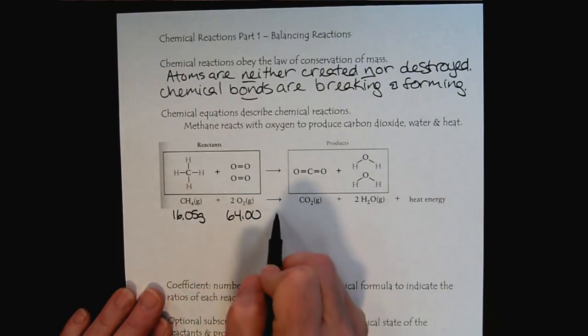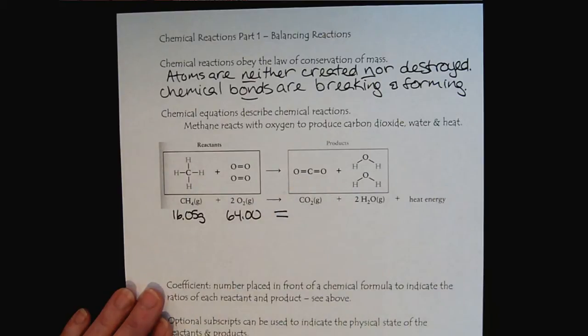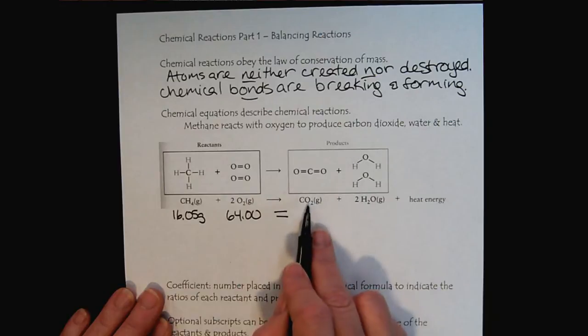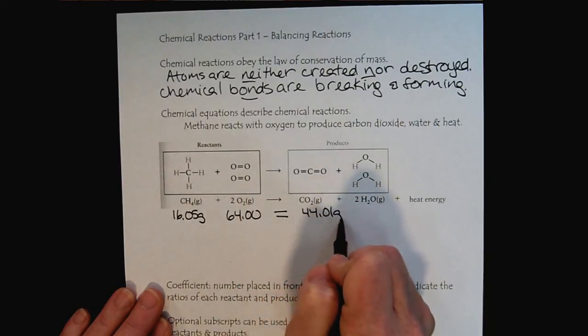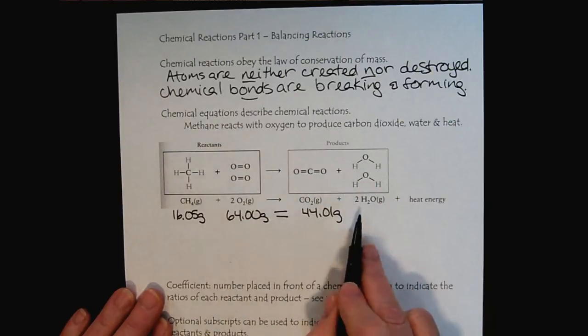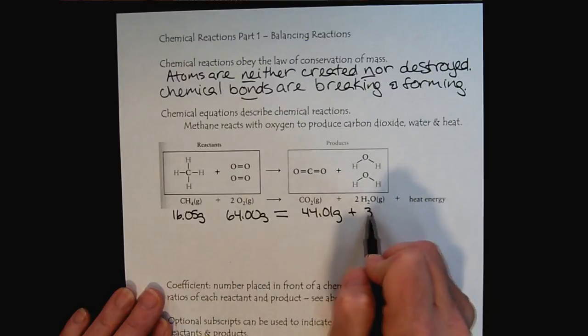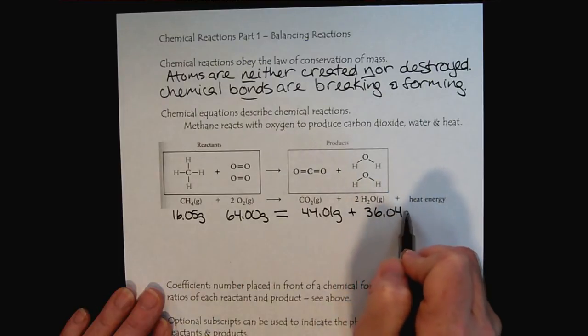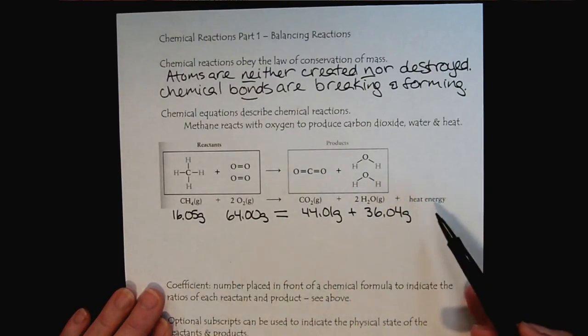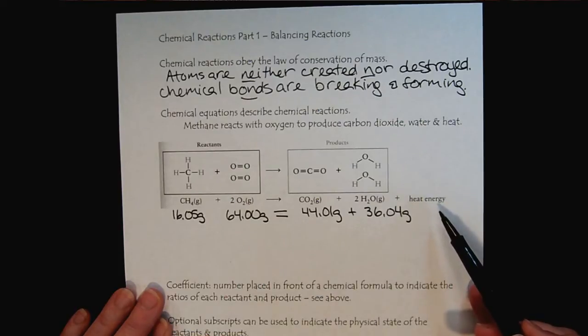We can look at our arrow like we would an equal sign of mathematics. There would be one mole of carbon dioxide, 44.01 grams, and then last but not least, two moles of water, 36.04 grams. We do produce heat, and we'll talk about that in a later tutorial looking at the energy changes that occur with chemical reactions.